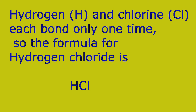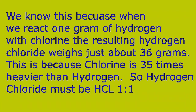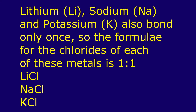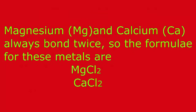By using Avogadro's principle, it was determined that hydrogen and chlorine only bond once, so the formula for hydrogen chloride is HCl. We know this because when we react 1 gram of hydrogen with chlorine, the resulting hydrogen chloride weighs about 36 grams — because chlorine is 35 times heavier than hydrogen. It was also determined that lithium, sodium, and potassium bond only once, giving lithium chloride, sodium chloride, and potassium chloride. Furthermore, magnesium and calcium bond to chlorine twice. In the associated math lesson, we will show how these formulas were calculated using relative atomic masses and simple ratios and proportions.